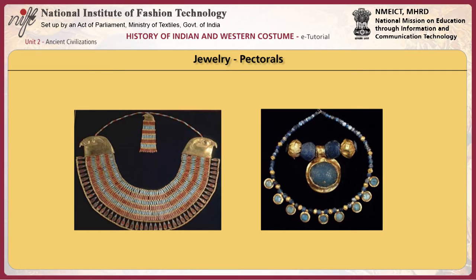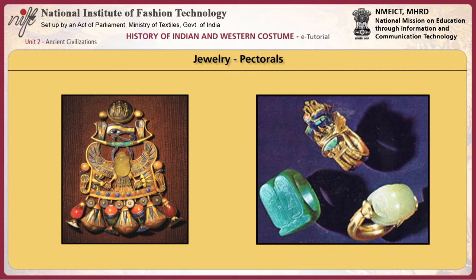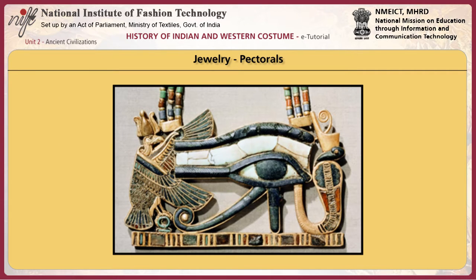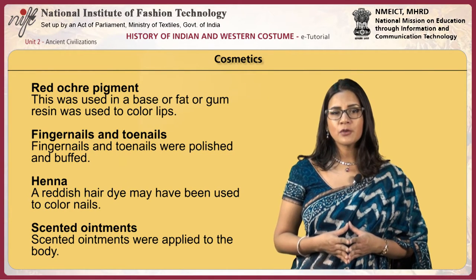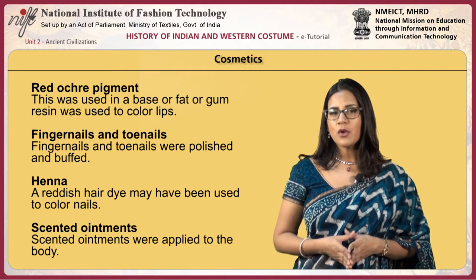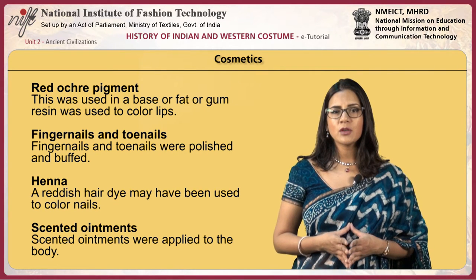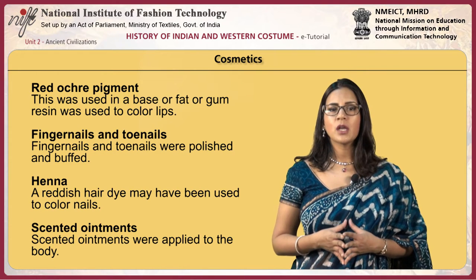The pectoral was usually a large flat breastplate made of gold or copper, often decorated with symbols and inlaid with precious stones or glass, hung over the chest by a chain around the neck. Egyptians who could afford it wore brightly colored jewelry to show their rank and importance in society, as well as their love of beauty. Many items of jewelry served a spiritual purpose as well by carrying images of the gods that protected the wearer. Both men and women decorated their eyes, skin and lips. Red ochre pigment was used in a base of fat or gum to color lips.